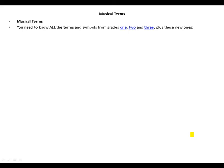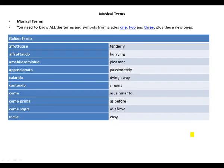Italian terms: affettuoso (tenderly), affrettando (hurrying), amabile (pleasant), appassionato (passionately).